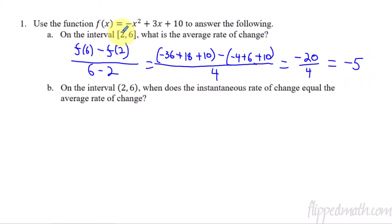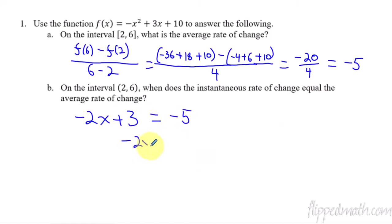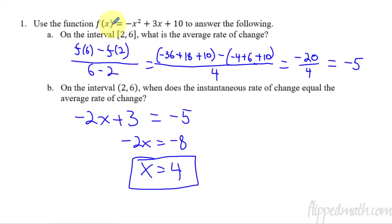Now we apply the mean value theorem to find when the instantaneous rate of change equals the average rate of change. The instantaneous rate is f prime, so the derivative of our function is negative 2x plus 3. We set that equal to the average rate of change, which is negative 5, and solve: we get negative 8 on one side, so x equals 4. That is the point on the interval from two to six — x equals 4 — where the graph has an instantaneous slope of negative 5, which equals the average rate of change.